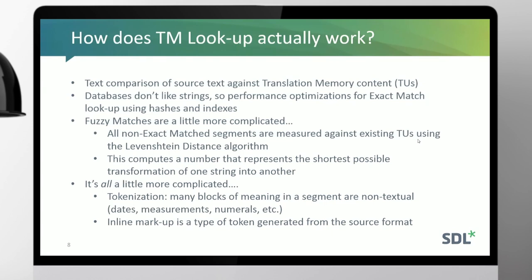How does TM lookup actually work? We do a text-based comparison of the source text being submitted for translation against the content of your translation memory. For exact matches, it's much faster not to do a string comparison — databases don't really like strings — so we use hashing and indexing. We have a linguistic index that operates in the same manner, performing lookup faster because you're looking at less data. Hashing is an algorithmic computation of an integer based on an input string, and it's much faster for a database to compare hashes than to do a full text comparison.